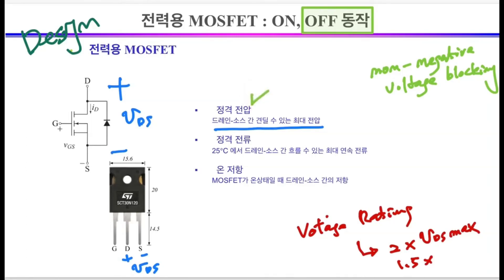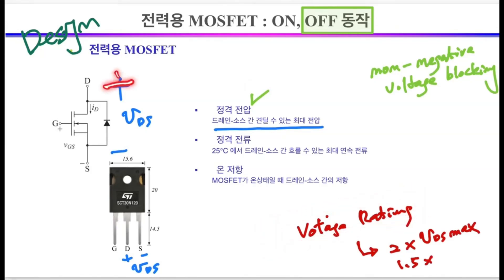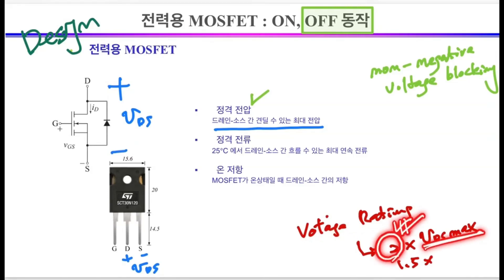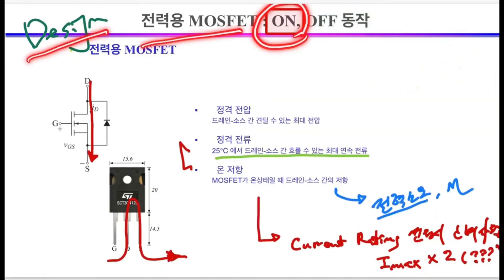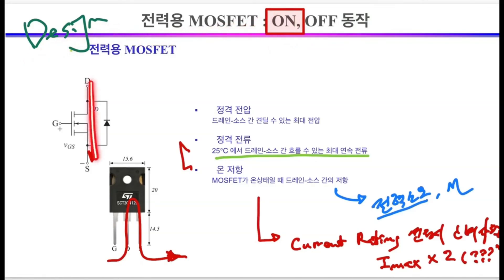So how do you select the rated voltage of the MOSFET? There will be a maximum voltage that can be applied between the drain and source in a circuit. If you know this maximum voltage, you can use a MOSFET rated at approximately twice that voltage. In some cases, you may select a MOSFET with a rated voltage of 1.5 times the maximum applied voltage. When the power MOSFET turns on, current can flow between the drain and source — and it's good to know that it can flow in the opposite direction as well.